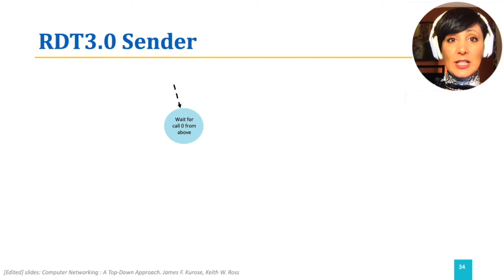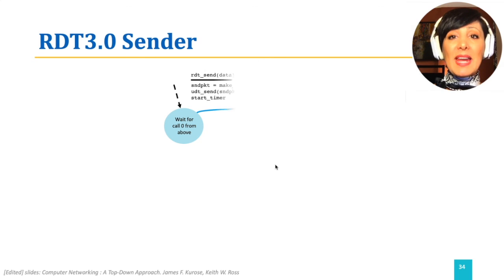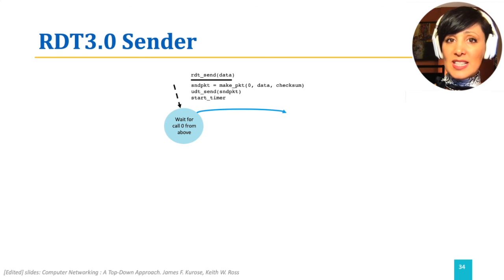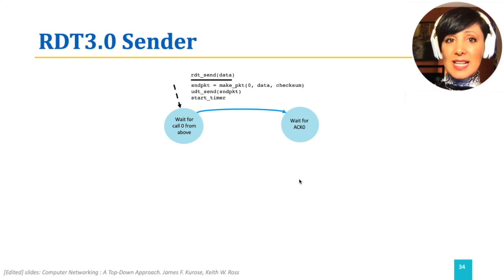Let's take a look at the sender FSM in our RDT3.0 with packet loss possibility. After receiving the call with data from the upper layer, the sender makes the packet with sequence number 0, sends it using UDTSend, starts the timer, and transitions to waiting for acknowledgement. If the wait becomes too long and reaches the timeout, the same packet will be sent again and the timer is reset.